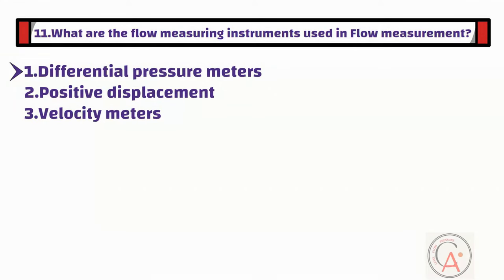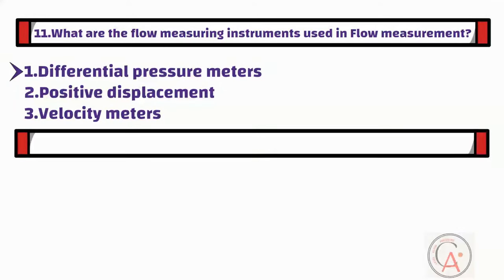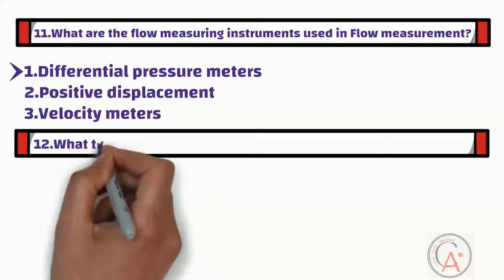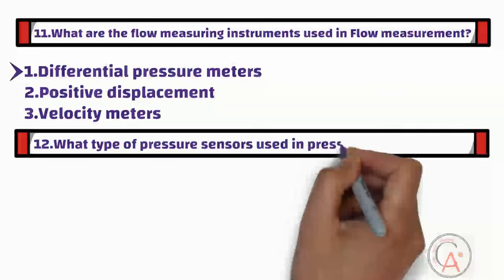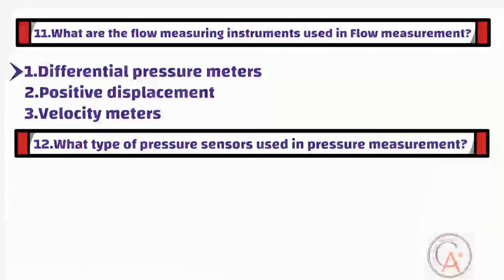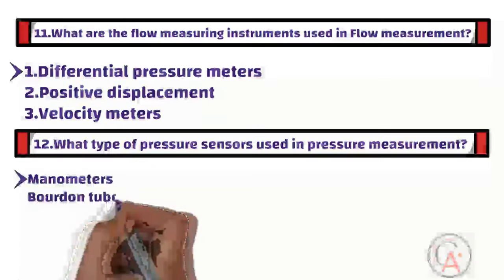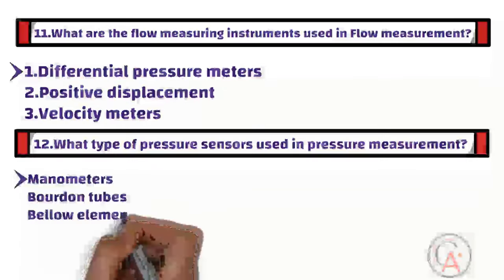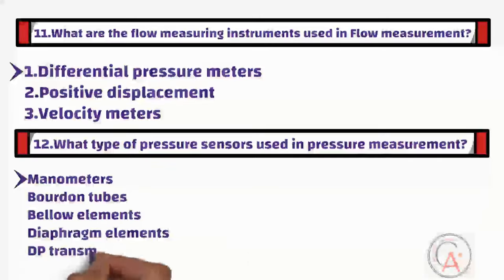The twelfth question is: what type of pressure sensors are used in pressure measurement? There are different types of pressure sensors such as manometers, Bourdon tubes, bellows elements, diaphragm elements, and DP transmitters being used in pressure measurement.